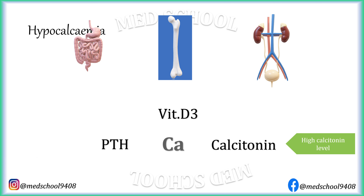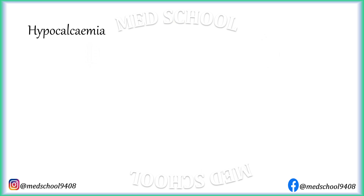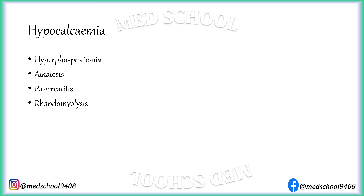High calcitonin levels can also lead to hypocalcemia. Other causes include hyperphosphatemia, which causes calcium to deposit; alkalosis, which decreases ionic calcium; pancreatitis, where calcium is deposited due to fat saponification; rhabdomyolysis, which leads to hyperphosphatemia and hypocalcemia. The mechanism of hypocalcemia in gram-negative sepsis and COVID-19 is unknown.